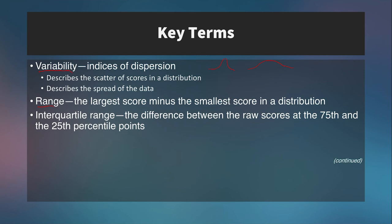We also have what's called the interquartile range. Now the interquartile range or the IQR is the difference between the raw scores at the 75th and the 25th percentiles. So really we're just taking those middle two quartiles from the 75th down to the 25th percentiles. And what that does is that cuts off any outliers that we might have in the data.